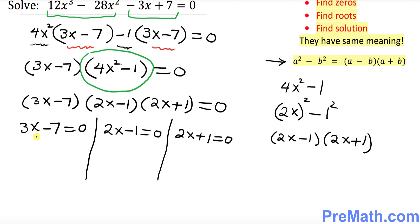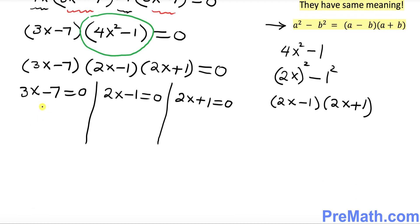Let's take care of the first equation. I want you to add 7 on both sides. What happened? This is gone. So we got 3x equal to 7. Divide both sides by 3. So x turns out to be 7 third. So one of the solutions is 7 third.